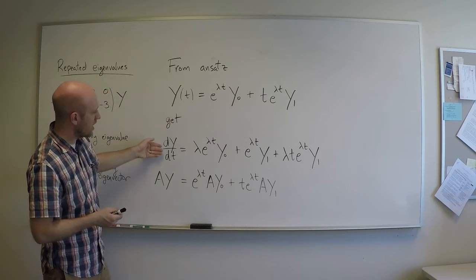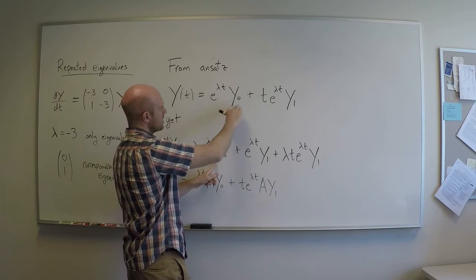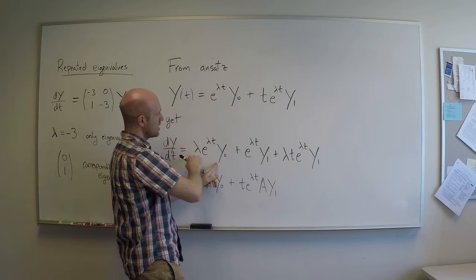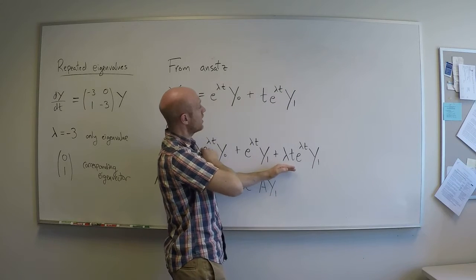So if I plug that into the left-hand side, I have dy/dt equals, well, let's differentiate this guy first. I get a lambda that comes down, so this part, the derivative of this becomes this. Now, the derivative of this part, I have to use the product rule.